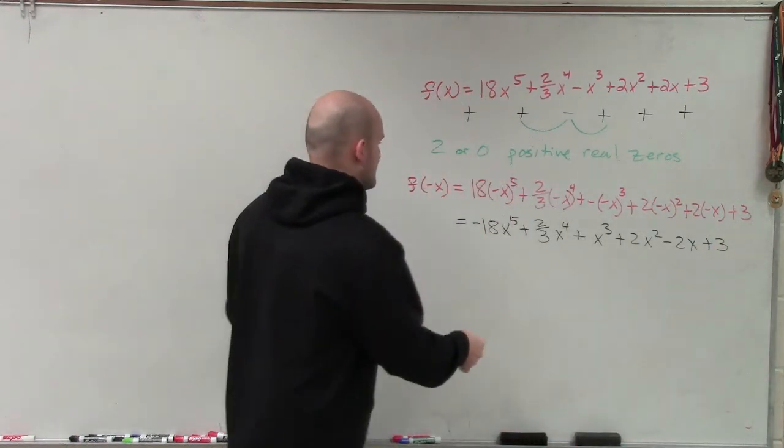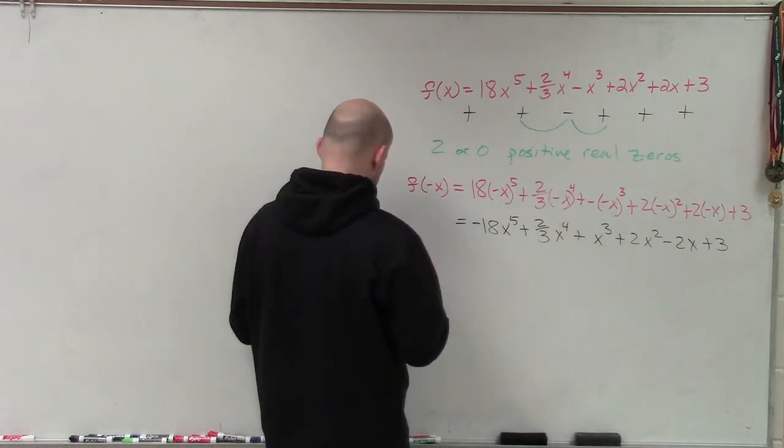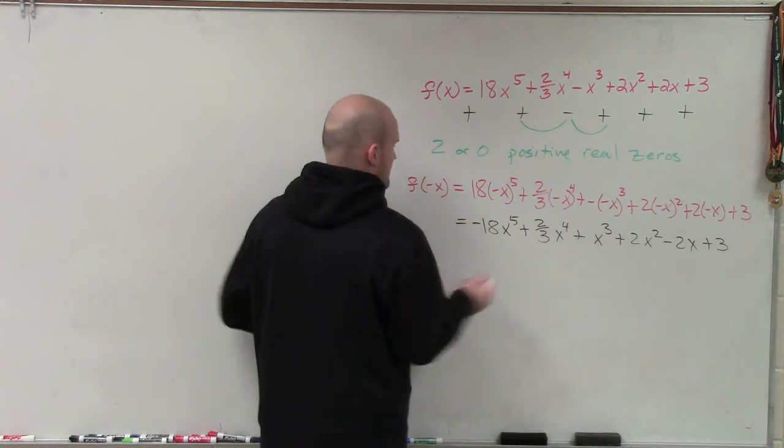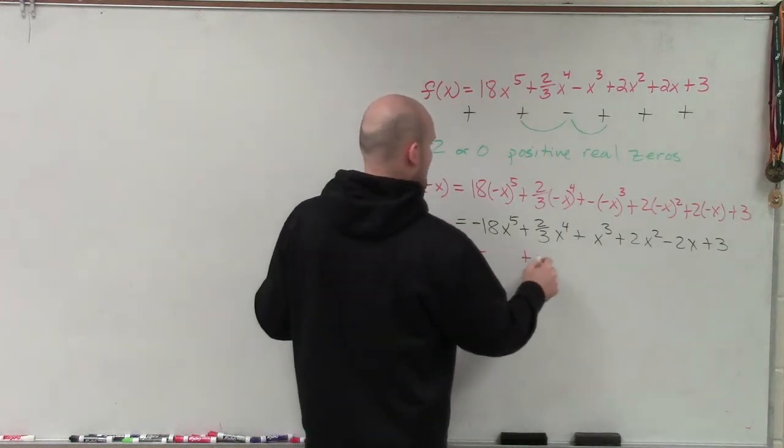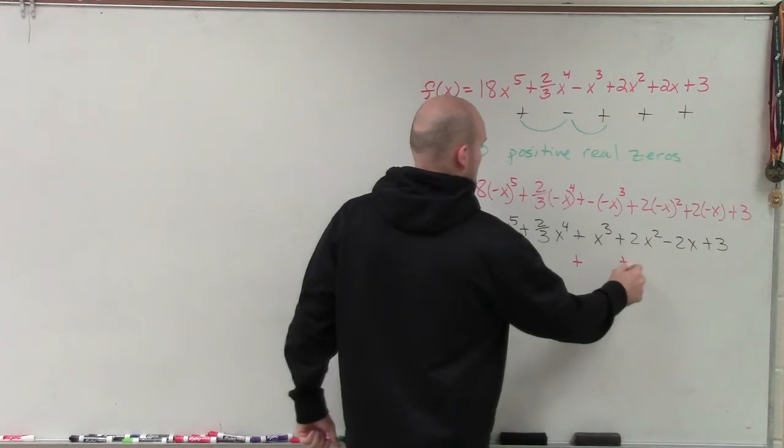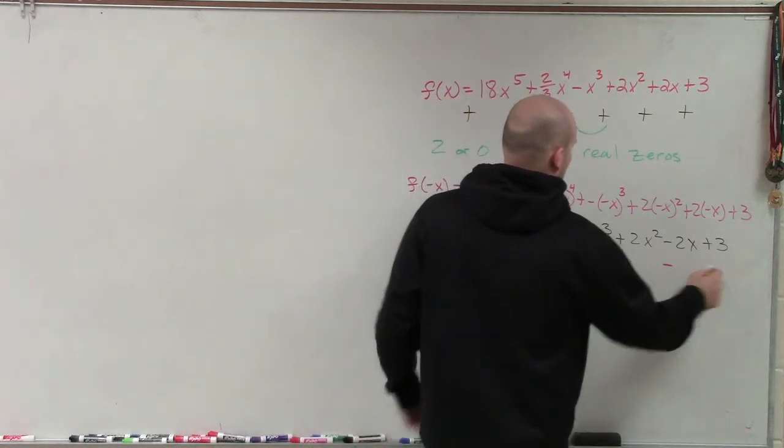So now, again, we drop down the signs. So I'll have—let's drop down with a different color. So now I have negative, positive, positive, positive, negative, positive.